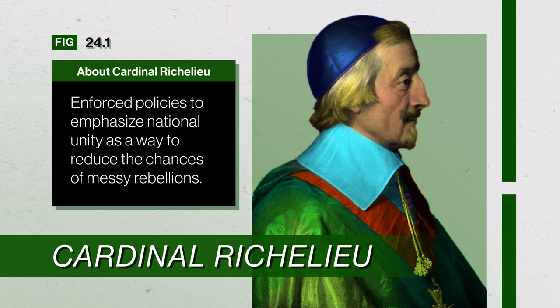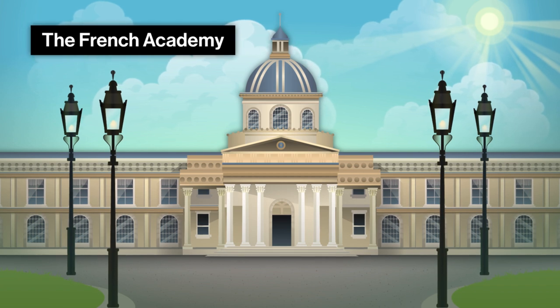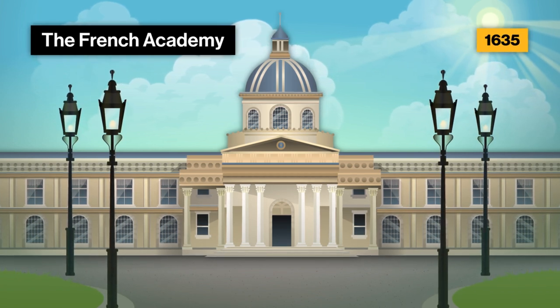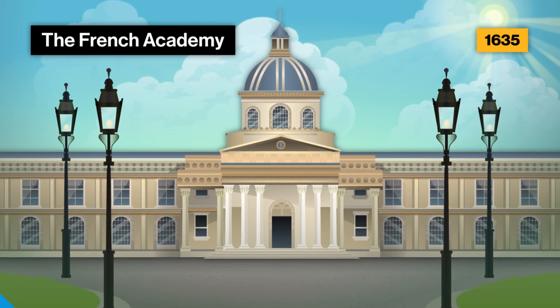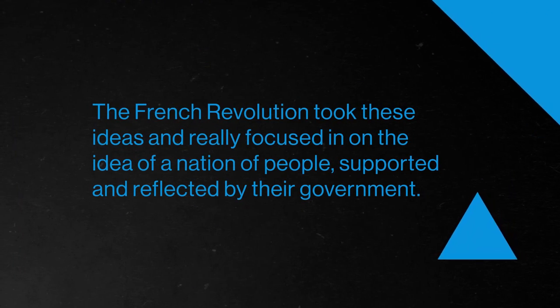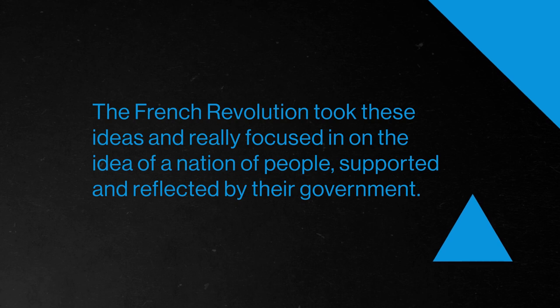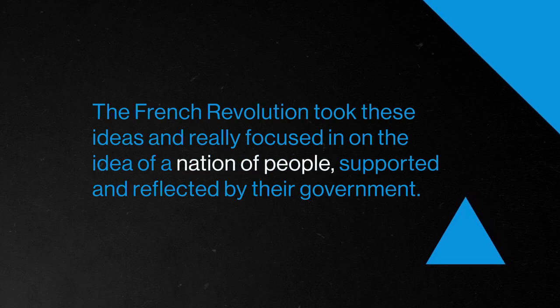But then things started to change. French rulers like Cardinal Richelieu enforced policies to emphasize national unity as a way to reduce the chances of messy rebellions. Richelieu also established the French Academy in 1635, which was tasked with compiling the very first standard French dictionary. And the French Revolution took these ideas and really focused in on the idea of a nation of people, supported and reflected by their government. Sometimes this process of building a nation meant finding out what people did have in common — not everyone was eating fish stew or spätzle, but overall the French did love their cheese and wine, so those became part of French cuisine and national identity.